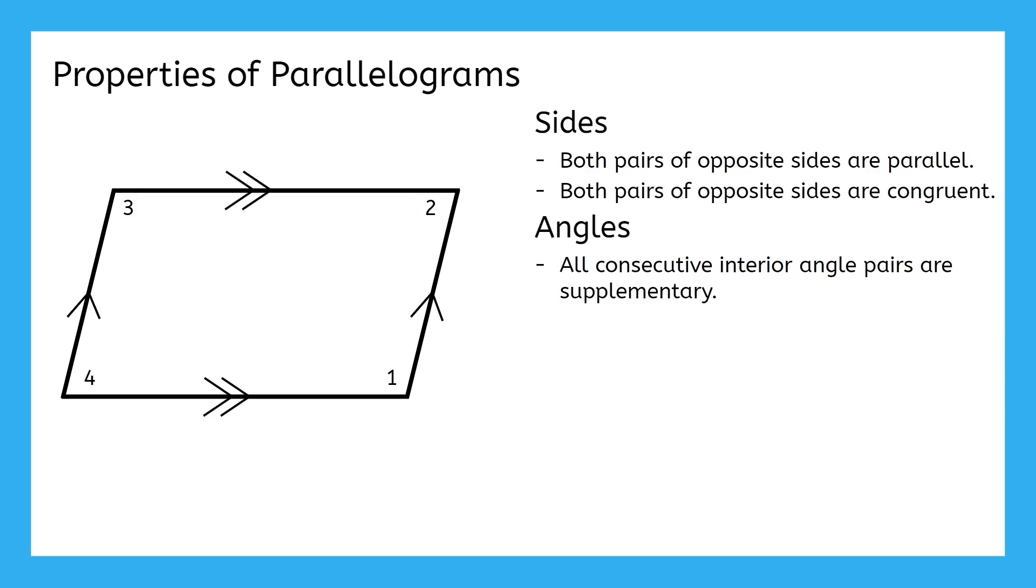Now check this out. Angles 1 and 2 are consecutive interior angles, and angles 2 and 3 are consecutive interior angles. That means that both of these pairs are supplementary, and their angles add up to 180 degrees. Can you use this to determine how angles 1 and 3 are related? Angles 1 and 3 are congruent! We can prove that by using these two equations.